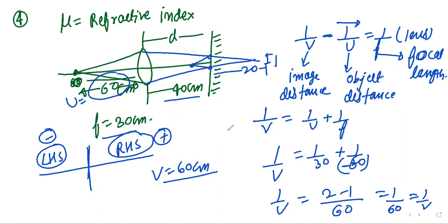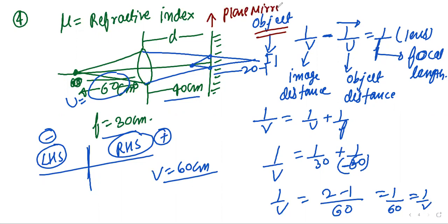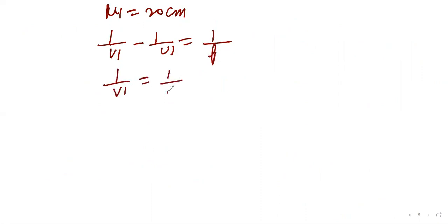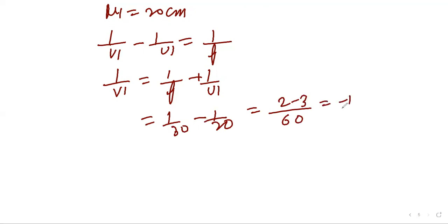I1 acts as object for the plane mirror. U1 = 20 cm (on the right side, so positive). Using mirror formula: 1/v1 = 1/f + 1/u1 = 1/30 + 1/(−20). LCM = 60: (2−3)/60 = −1/60, so v1 = −60 cm.